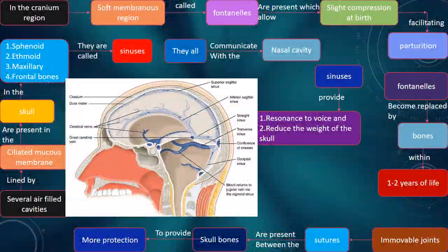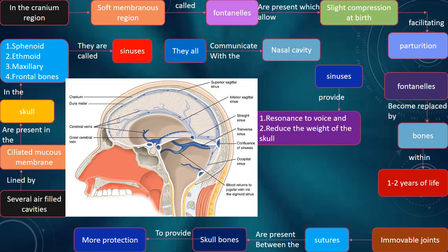In the cranium region, the soft membranous regions called fontanels are present, which allow slight compression of the bones, facilitating parturition. Fontanels become replaced by bone within one to two years of life.